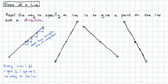So for this line, every time I go right one unit, I have to go up one unit to stay on the line. For this other line, if I go right one unit, I have to go up two units to stay on the line. It doesn't matter where I start — right one unit, up two units. These are all congruent triangles.